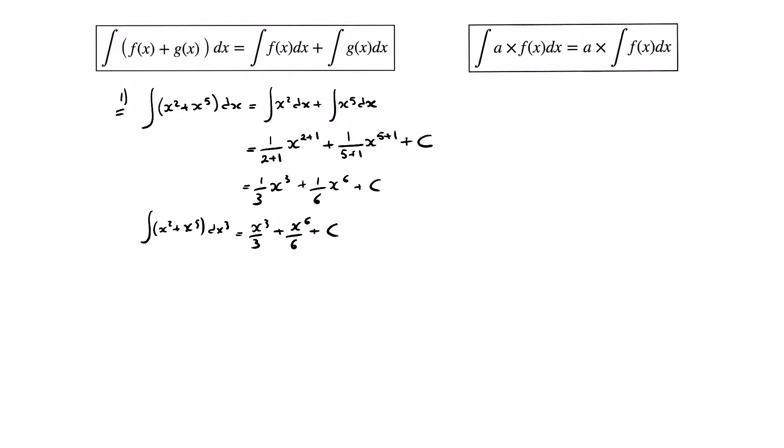The second rule at the top tells us that the integral of a times f(x) equals a times the integral of f(x). All this is really saying is that if we have a function which is being multiplied by a number, we can choose to take that number outside of the integral if we wish to.